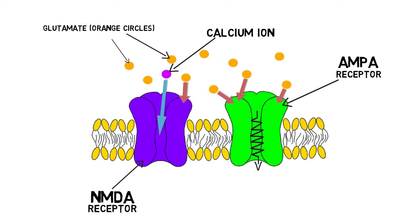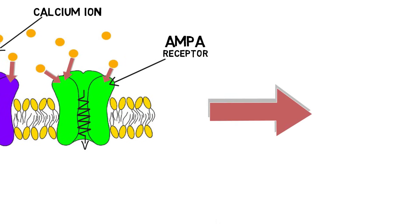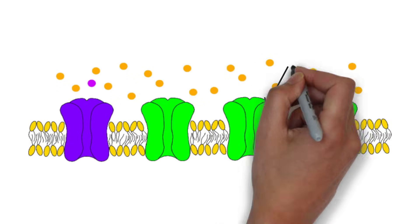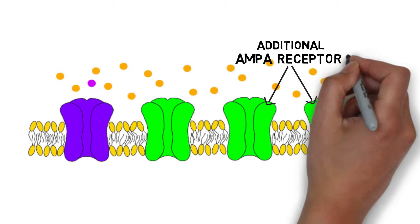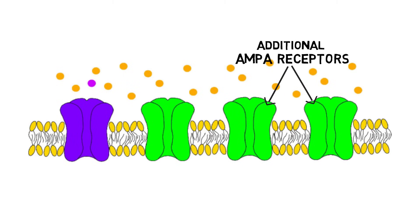This influx of calcium initiates cellular mechanisms that cause more AMPA receptors to be inserted into the neuron's membrane. The new AMPA receptors are also more responsive to glutamate, and allow more positively charged ions to enter the cell when activated.